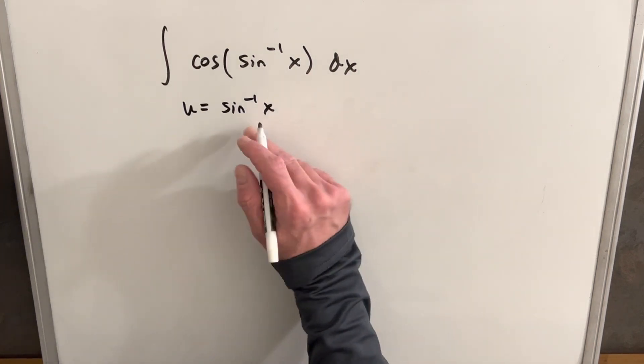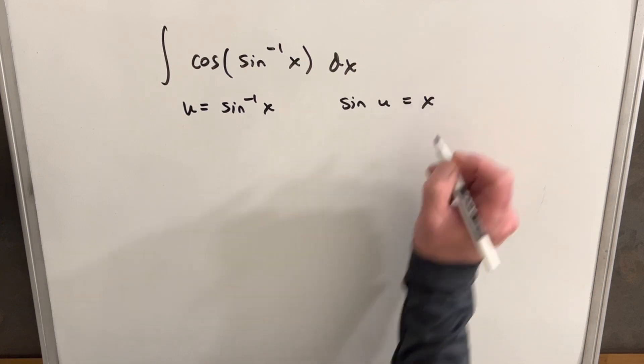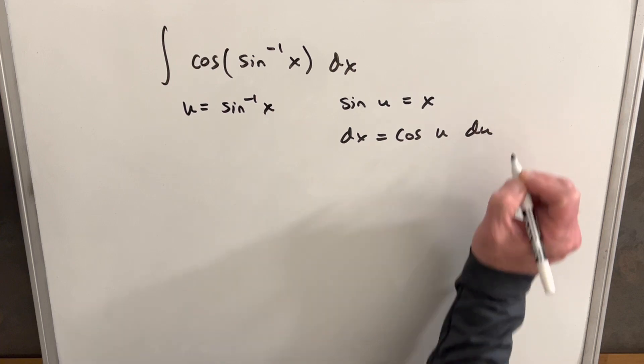Then what we can do is use the inverse property to write this as sine u equals x, and then take the derivative to get our dx equal to cosine u du.